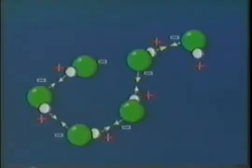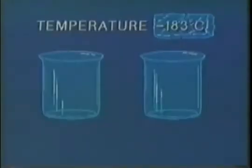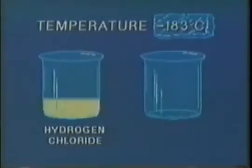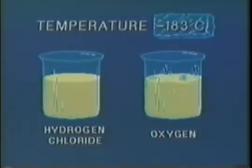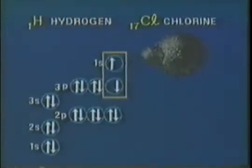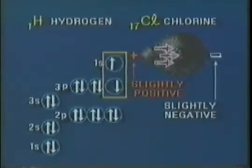The polar molecules of hydrogen chloride exert fairly strong forces of attraction on each other, causing them to have higher boiling and melting points than non-polar molecules of similar size. When one nucleus exerts a stronger attraction than the other, a polar molecule may result — but it doesn't always happen this way.